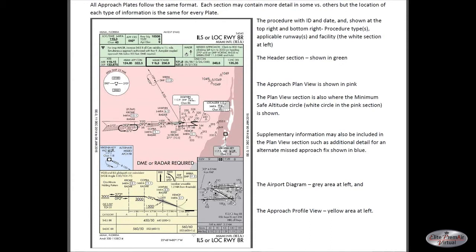The yellow area is the profile view. It gives you the key reference points and key altitudes. A line underneath an altitude indicates that you cannot be below that altitude at that point, but you can go above it. Think of the line as a floor — you can't go below the floor, but you can go above it.